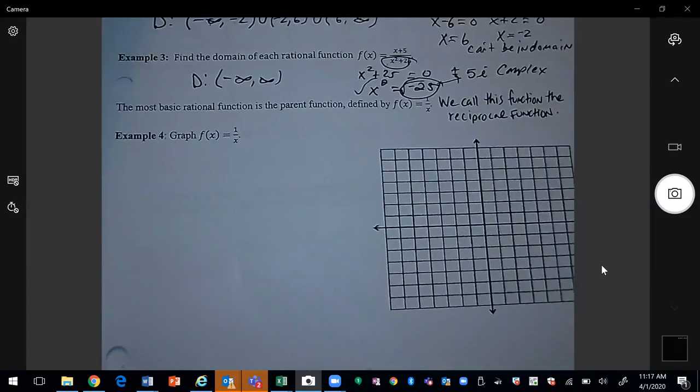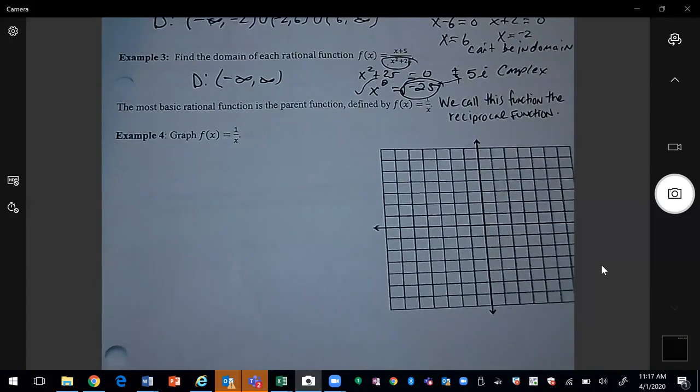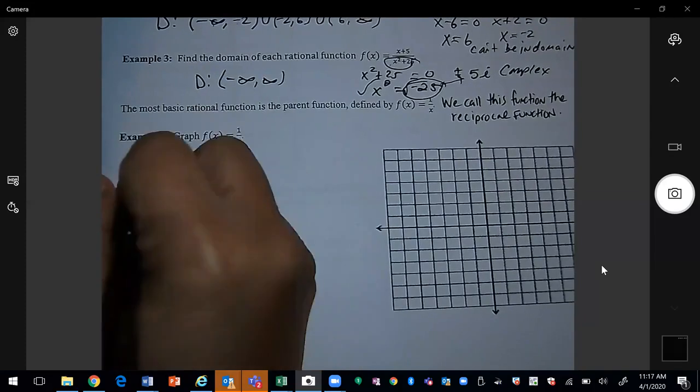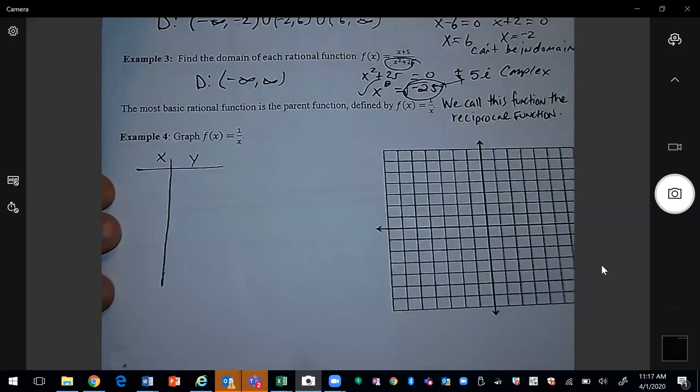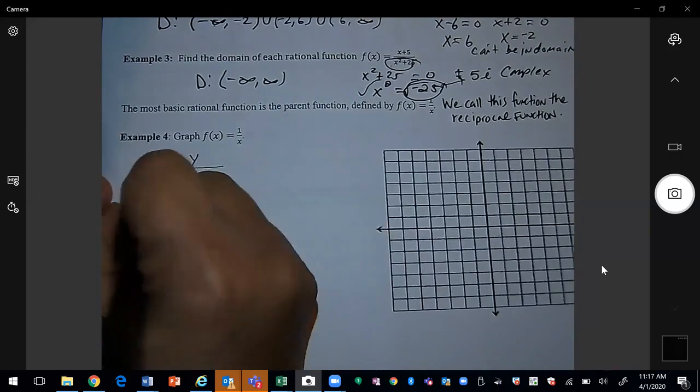We want to know what does it look like? What does this function look like? So if I draw a table here for my x and y, I can use some negative numbers.